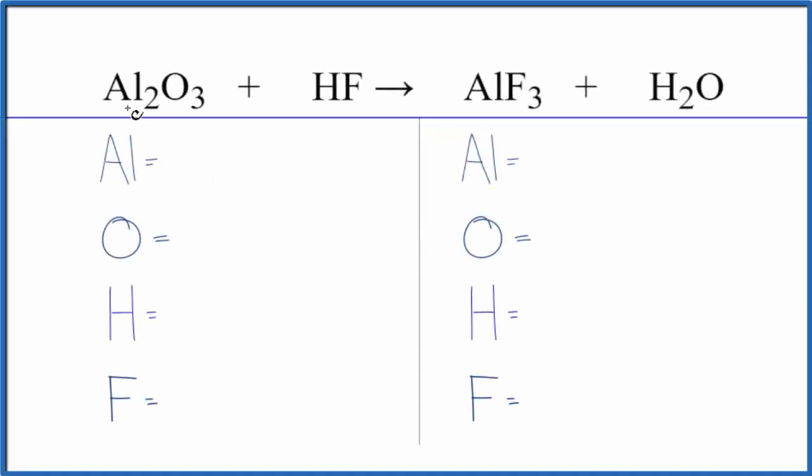In this video, we'll balance the equation Al2O3 plus HF. This is aluminum oxide plus hydrofluoric acid. Let's count the atoms up and balance the equation.